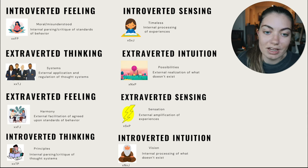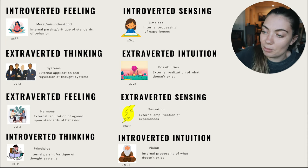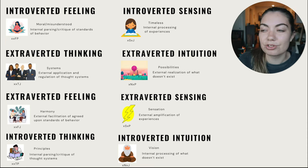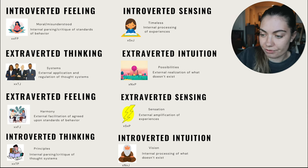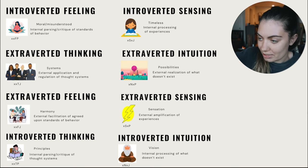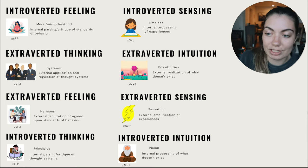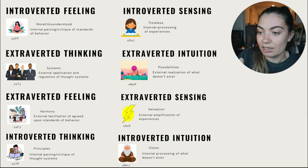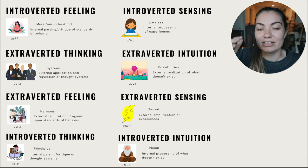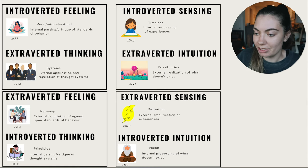So your fourth letter, J or P, is judging or perceiving — that's a code for the first column on the left, which are the judging functions, and the column on the right are the perceiving functions. Your third letter is your judging letter: thinking or feeling. Your second letter is your perceiving letter: sensing or intuition. These are further broken up by your first letter, introvert or extrovert, giving us introverted and extroverted versions of each. These functions are broken down into pairs.